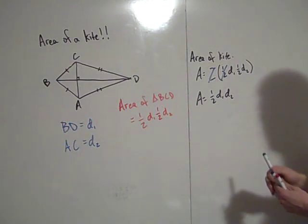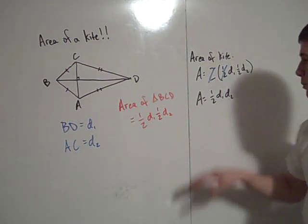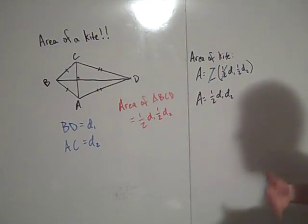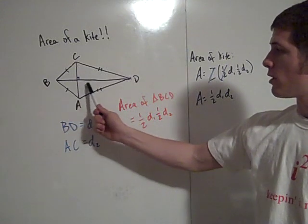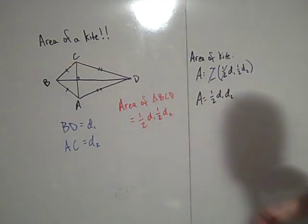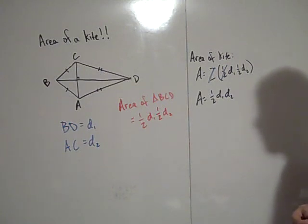If you know the lengths of the diagonals, you can find the area of the kite quite simply by using this formula. There are other ways to do it by finding the areas of each of these regions and adding them together. But this is a nice, clean, concise formula to find the area of a kite.